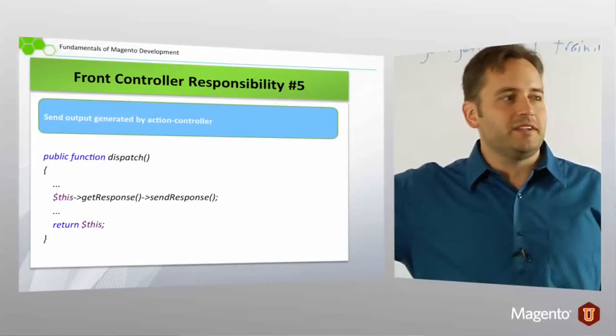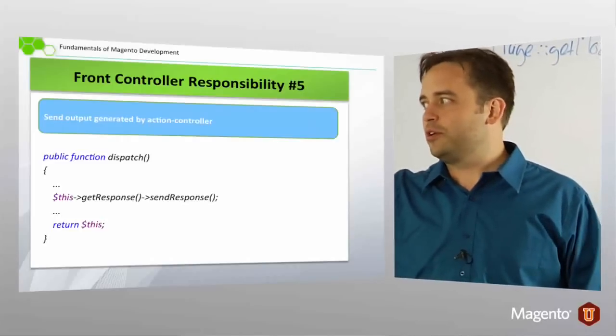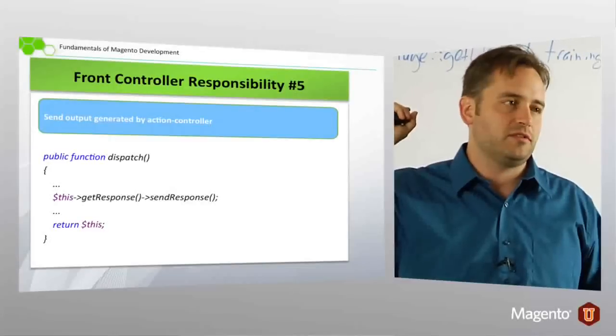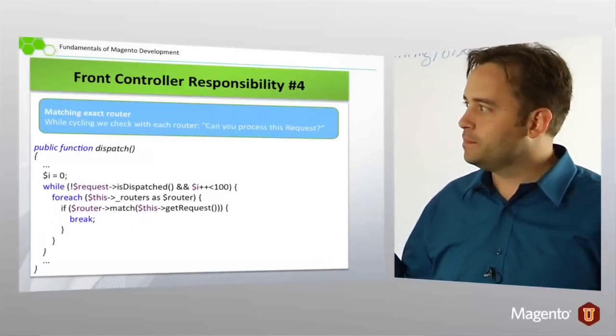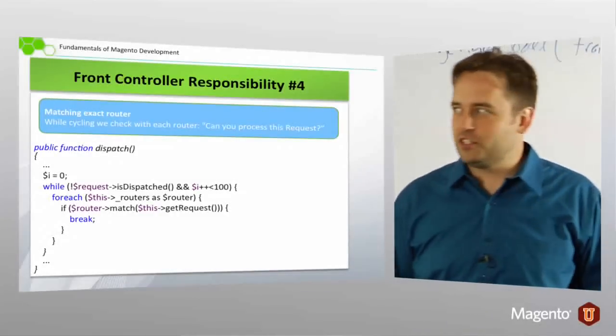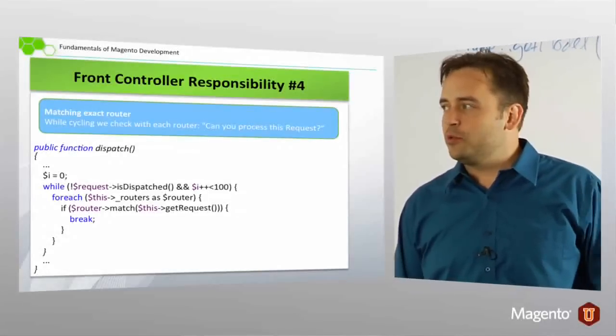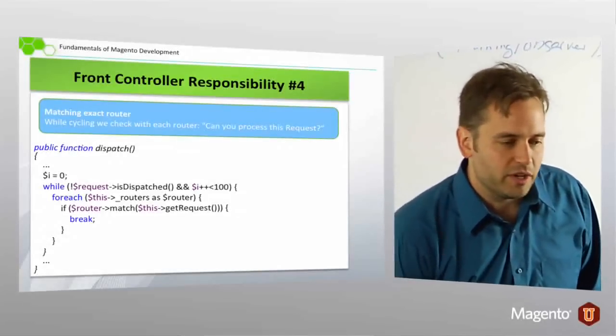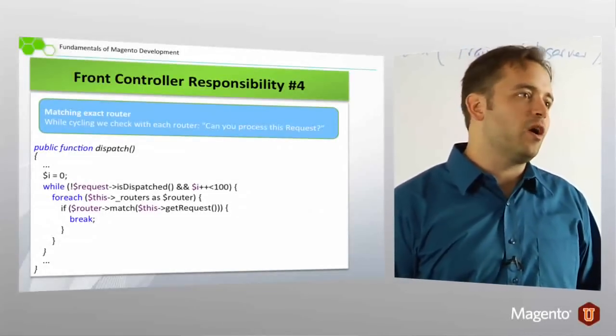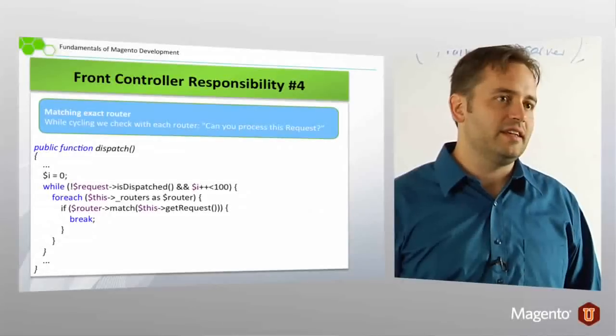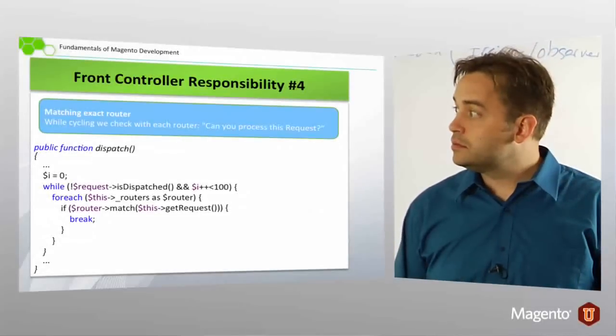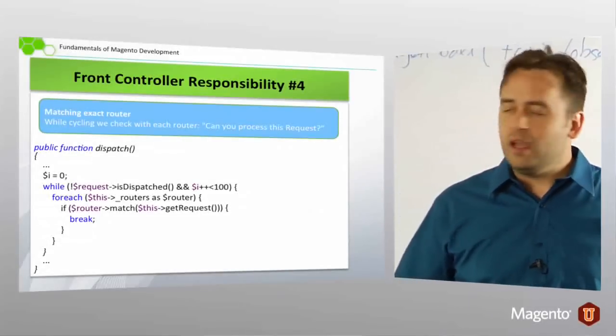All right. So then, number five. This is really the goal of what we're doing. We need to get the response object, whatever's been tacked onto the response object and send it to the browser. It was just the number that was chosen. I mean, because it just makes, you will never have this many attempts at a route match. Again, the only time you're gonna come up against this is if you have some error in your code.